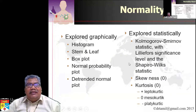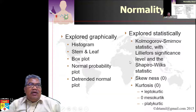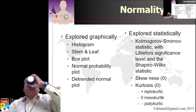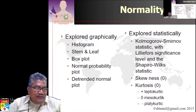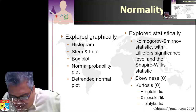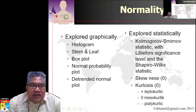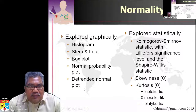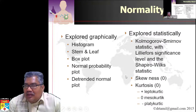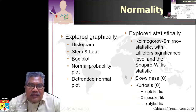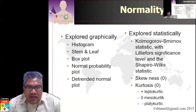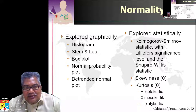How do we test for normality? We can do it two ways: either graphically or statistically. Graphically we have the histogram, stem-and-leaf, box plot, normal probability plot, and de-trended normal plot. Statistically we have the Kolmogorov-Smirnov test, the Shapiro-Wilk test, and the skewness and kurtosis statistics.